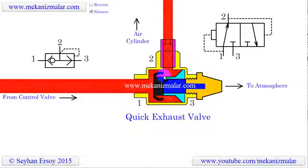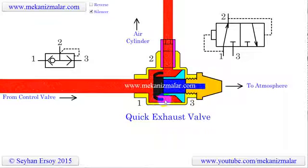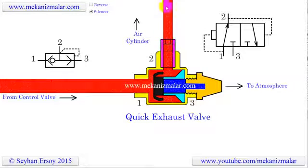When the pressurized air comes from the control valve via port 1, it pushes the rubber spool toward port 3 and blocks it. At the same time, the circumference of this rubber spool bends inward and allows the compressed air to reach port 2. Port 2 is directly connected to the blind end of the air cylinder.